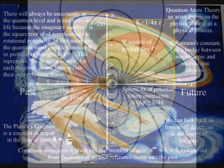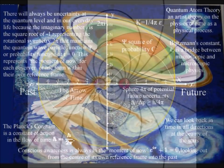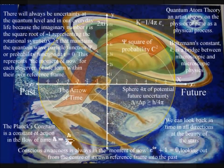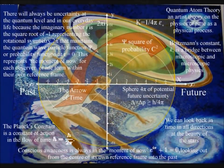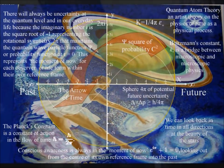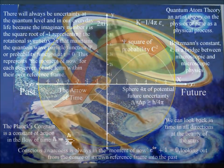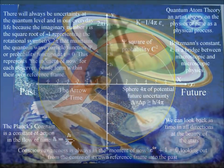Each individual observer is at the centre of their own reference frame with their own timeline or arrow of time from the past into the future. This can be seen in the way that each individual observer can look back in time, in all directions, at the beauty of the stars.